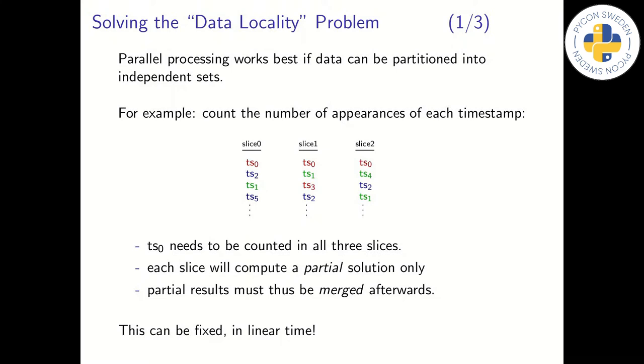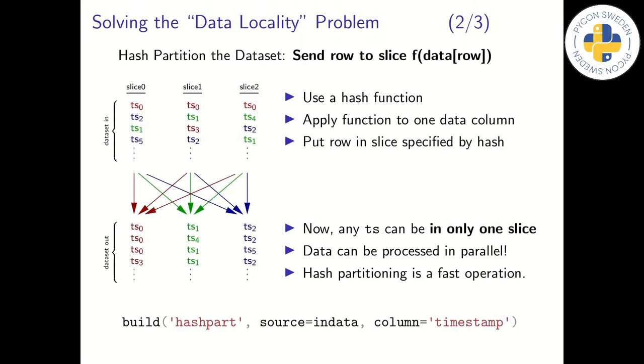But it does not have to be this way. There is a simple fix that runs in a linear time. We can use a hash function to reorder the data between slices, so that data becomes local per slice. In short, we read the whole dataset row by row, and write it to a new dataset. For each row, we make a decision in which slice to store it, based on the row's data. The decision is based on a hash function, applied to one of the columns. In this case, we partition the data based on the timestamp column, so that after partitioning, each specific timestamp will exist in only one slice. The actual partitioning is carried out by a built-in function, and the function call would look like what is shown at the bottom here, although slightly simplified for clarity.